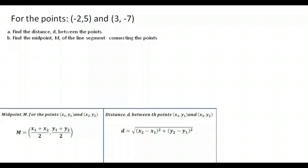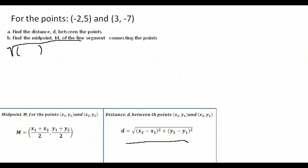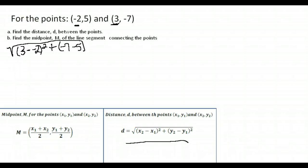Here's another example — find the distance and midpoint. Using the distance formula, we subtract the x values: three minus negative two. Our x values are three and negative two. We square that, then subtract our y values: negative seven minus five, and square that as well. Three minus negative two is five because subtracting a negative becomes a plus. Negative seven minus five is negative twelve.